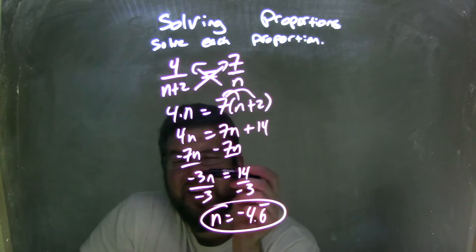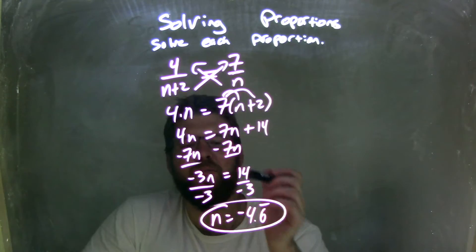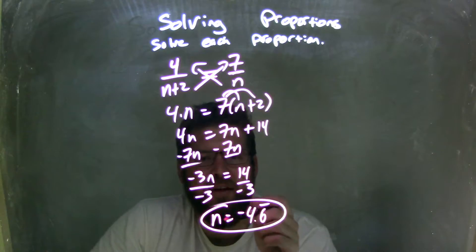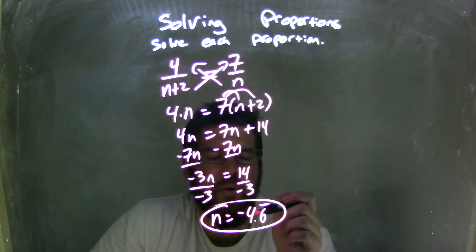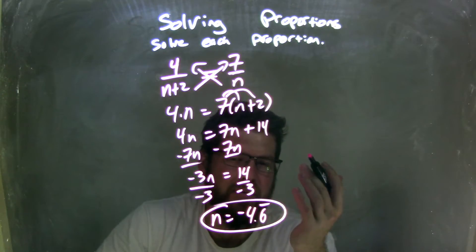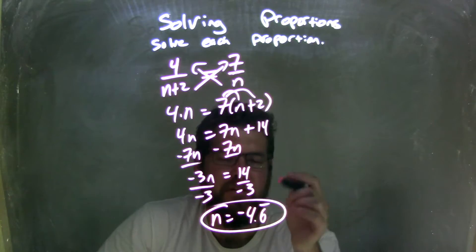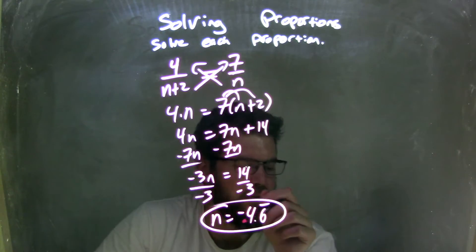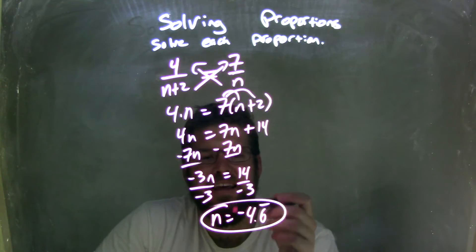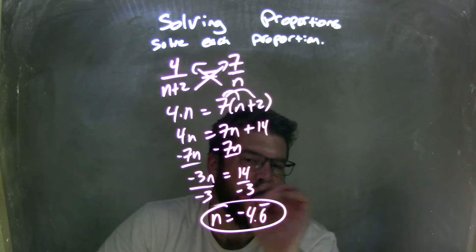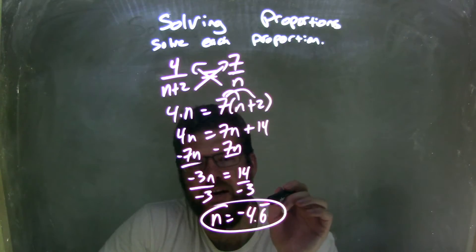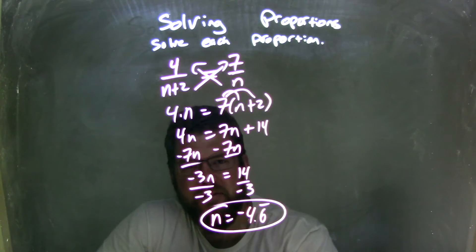coming down. I then divided by negative 3 on both sides, giving me the n by itself. Now I was left with n equals negative 4.6 repeating. I used my calculator for that one, but you could do it in your head or do long division to figure it out. So I'm left with n equals negative 4.6 repeating. The little bar at the top indicates that. And that is my final answer.